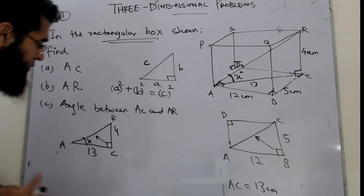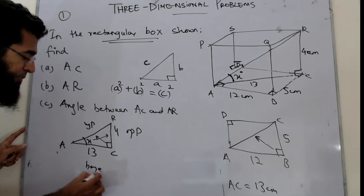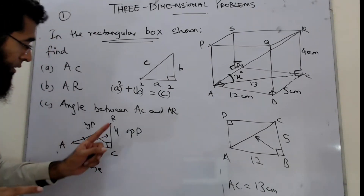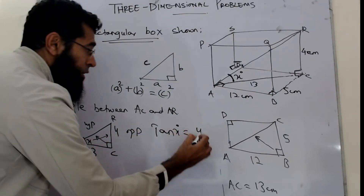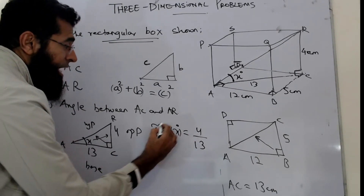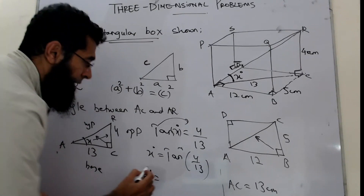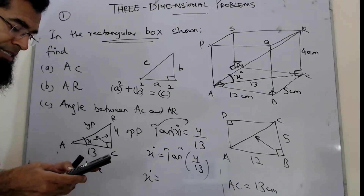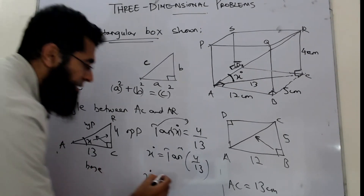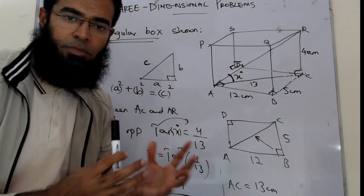To find this angle, we identify the sides relative to it: the opposite side is the height = 4, and the adjacent side is AC = 13. So we use tan: tan(angle) = opposite/adjacent = 4/13. Therefore, the angle = tan⁻¹(4/13) = 17.1 degrees.